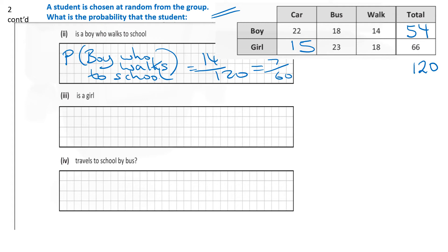Part 3 here. A student is chosen at random from the group. What is the probability the student is a girl? Well, there are 66 girls in total. So the probability that a girl is equal to 66 out of 120. And that will simplify to 11 over 20.